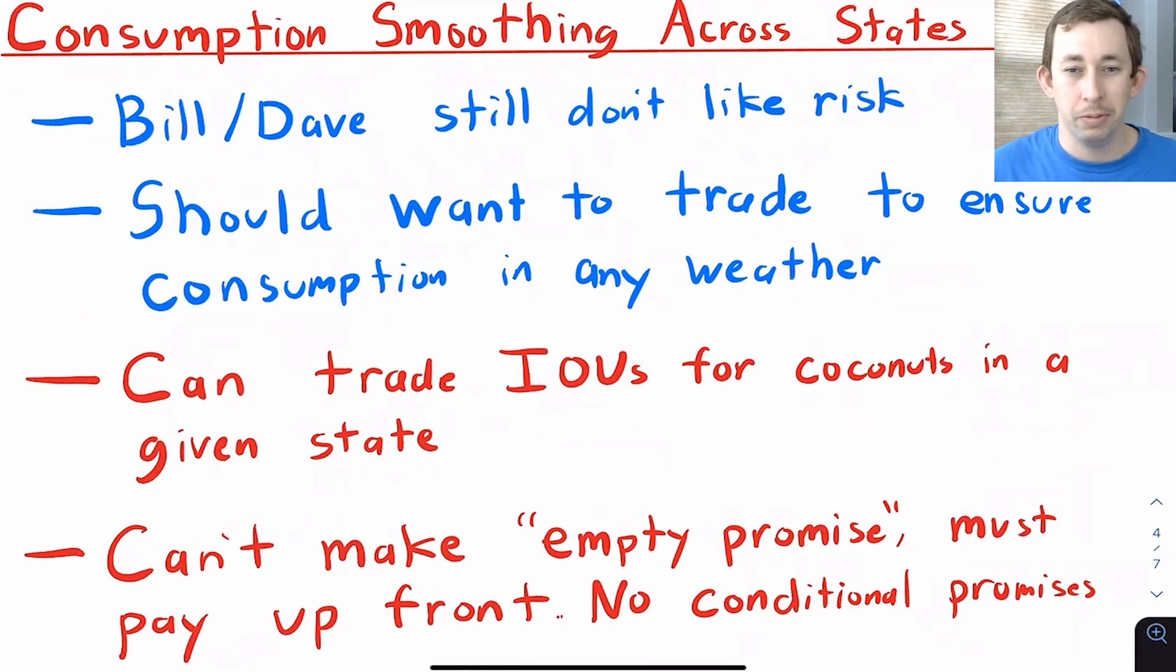Bill and Dave still don't like risk. They still don't like thinking that I could wake up tomorrow when it's snowy and I get two coconuts or I could wake up and it's sunny and I get zero coconuts. I really want to trade such that I can smooth that consumption out over the different weather patterns.